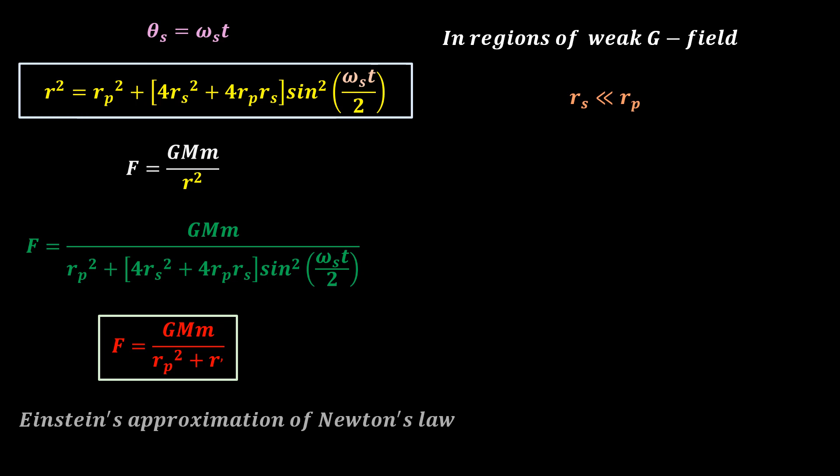If we factor out R prime p squared from the force equation, we have this. For planets farther away from the sun, the ratio R prime s over R prime p goes to zero, and the equation reduces to this.